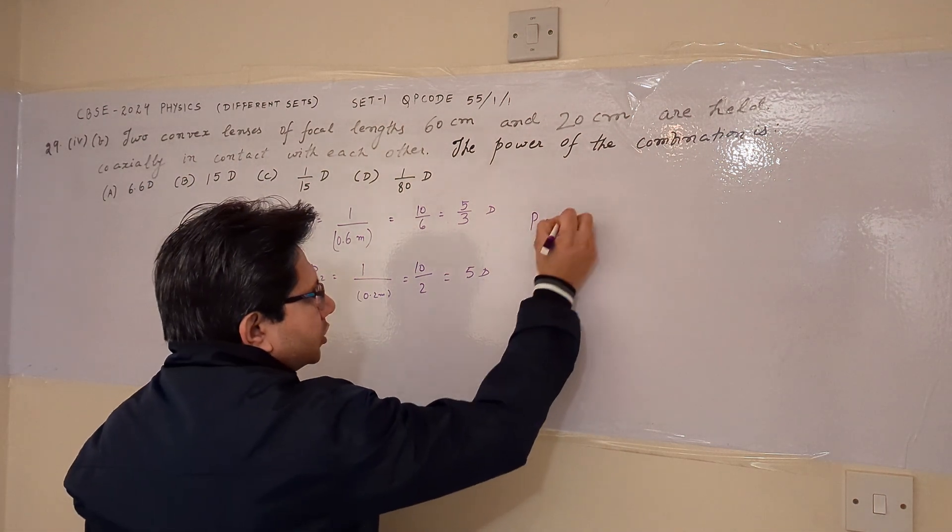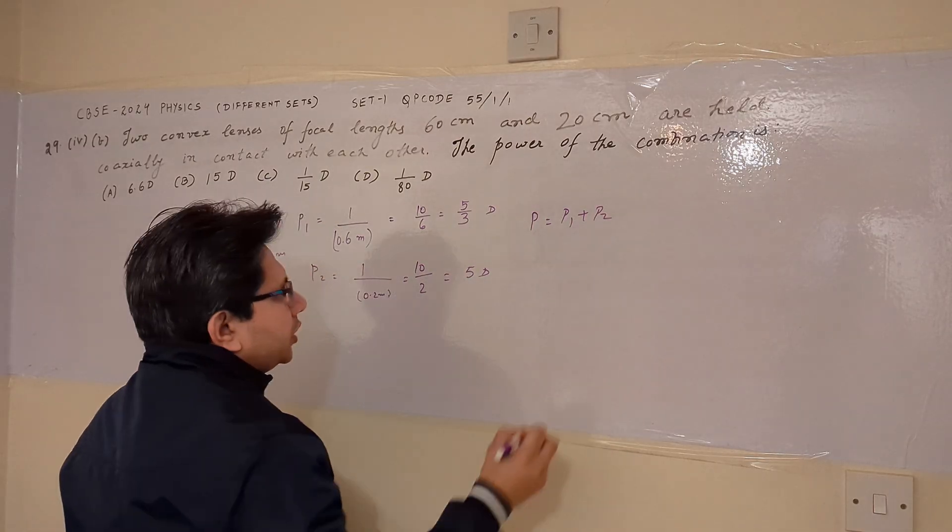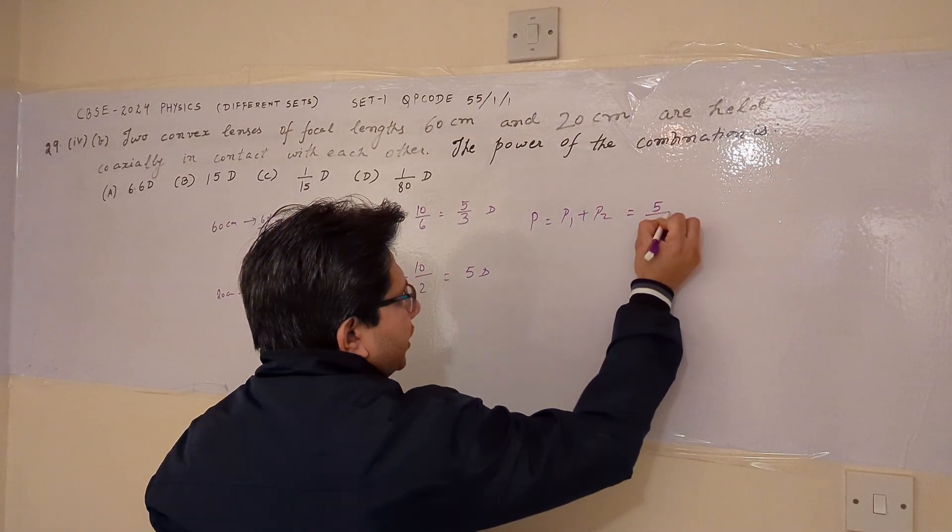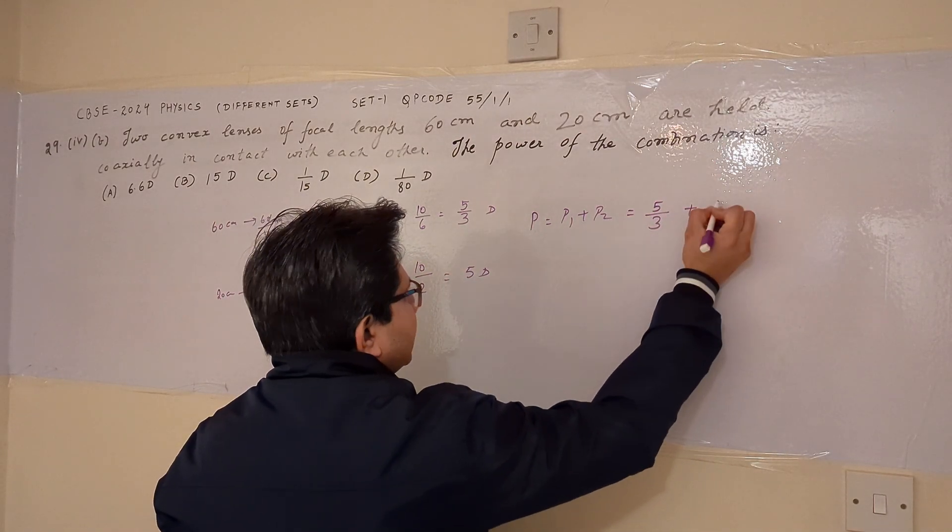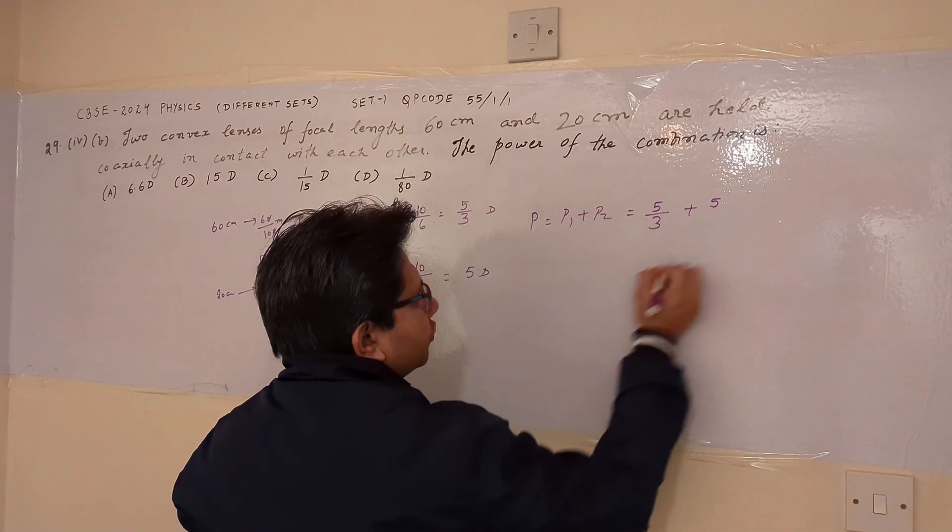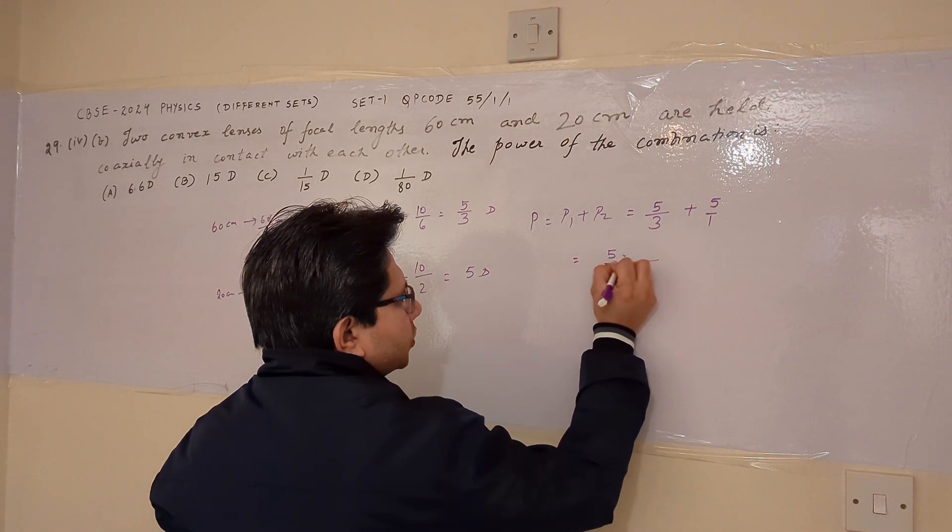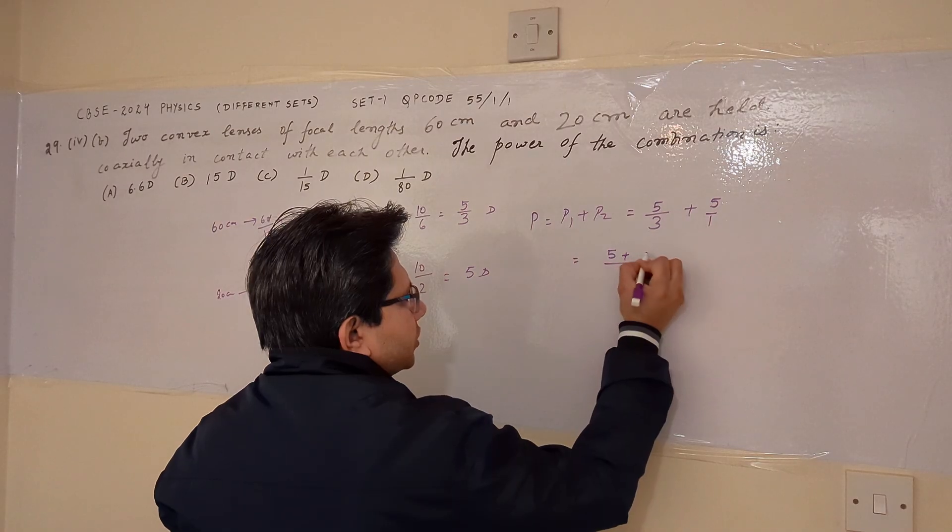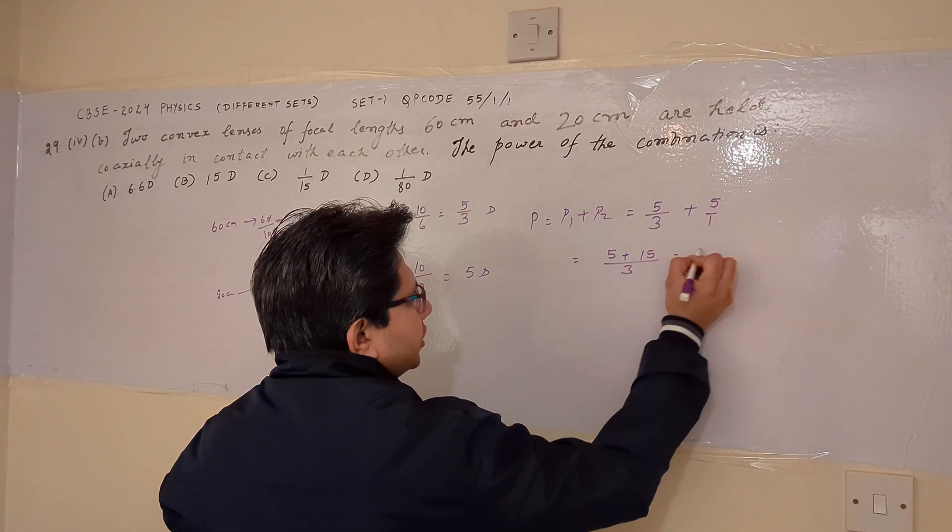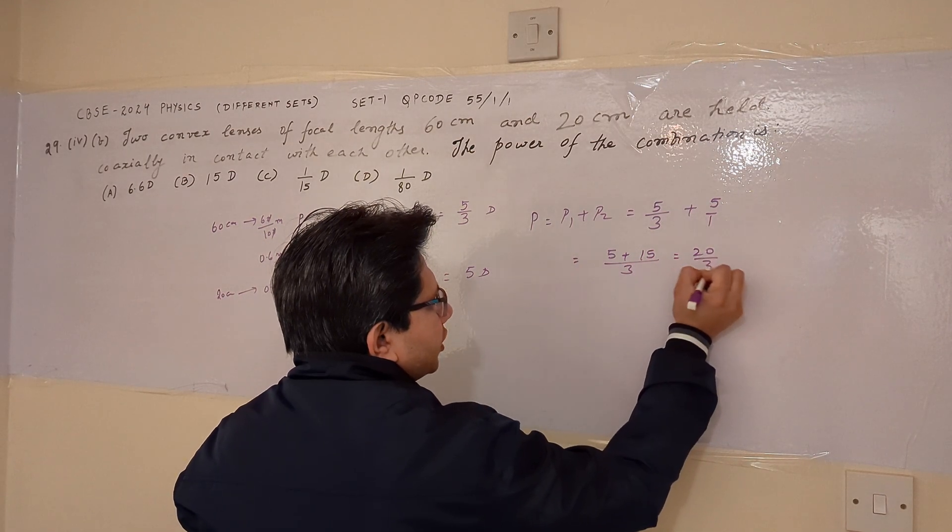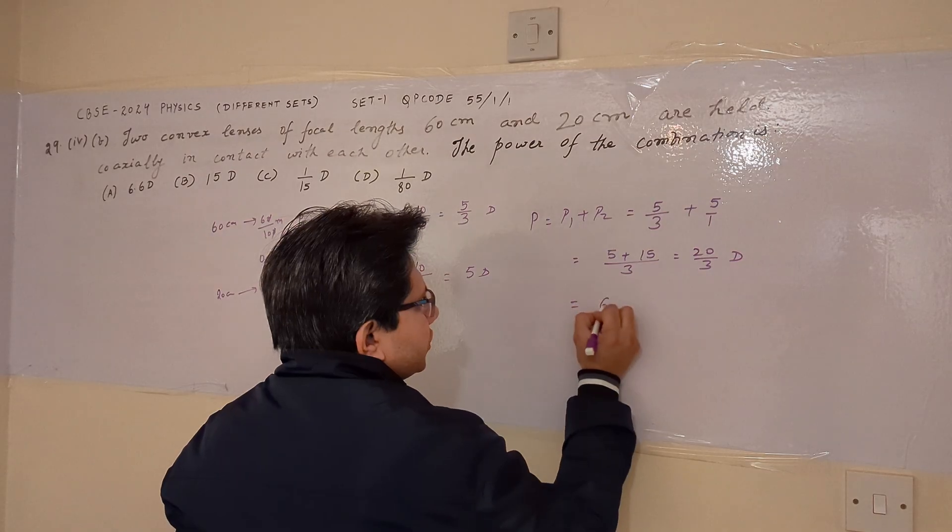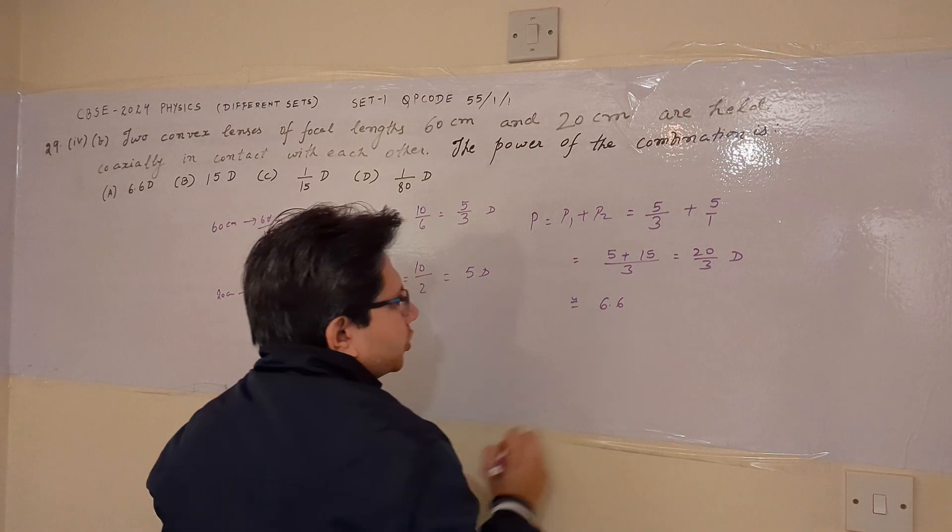And we have to calculate the total power. So the total power is P1 plus P2, where P1 which we have calculated as 5 upon 3 diopter and P2 we have calculated as 5 diopter. Taking 3 as LCM, we get this value as 5 plus 15 divided by 3, which is equal to 20 upon 3 diopter, so which is nearly equal to 6.6 diopter.